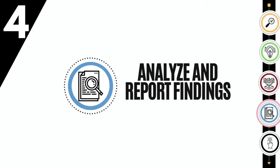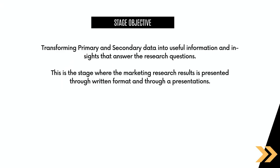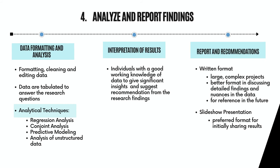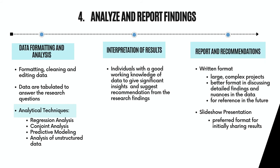Stage 4: Analyze and Report Findings. Analyzing the data obtained in a market survey involves transforming the primary and/or secondary data into useful information and insights that answer the research questions. This information is condensed into a format to be used by managers, usually a presentation or detailed report. The analysis starts with formatting, cleaning, and editing the data to make sure it is suitable for the analytical techniques being used. Common analytical techniques include regression analysis, used to determine correlations between factors; conjoint analysis, to determine trade-offs and priorities; predictive modeling, used to anticipate patterns in causality; and analysis of unstructured data such as internet search terms or social media posts to provide context and meaning.